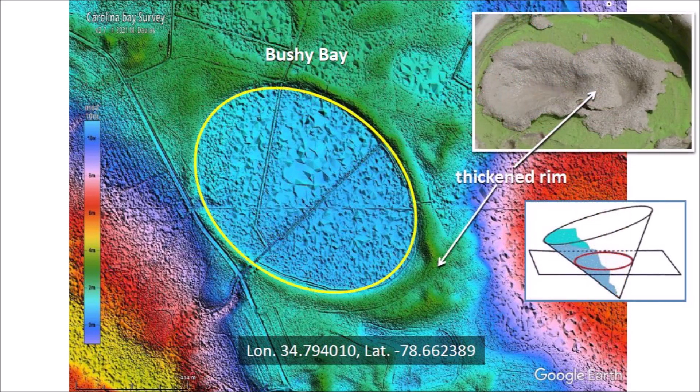The elliptical geometry of the bay indicates that Bushy Bay originated as an inclined conical cavity, because ellipses are conic sections. The raised rims of the Carolina Bays are created from the overturned flaps of the penetration funnels, and the thick rim on the southeast is made from the material that is pushed forward by the plowing action of the projectile as it makes the cavity. The thickened rims in the leading edge of the penetration funnels are also observed in experimental impacts.